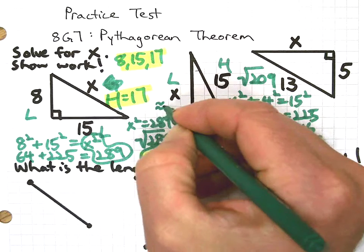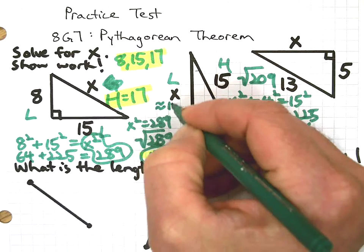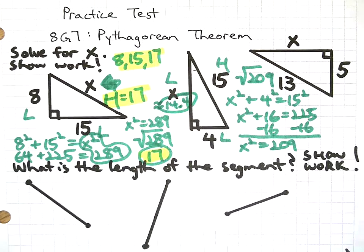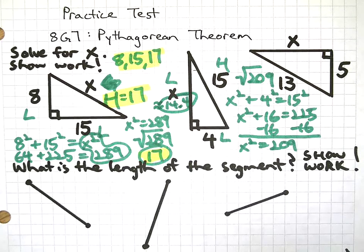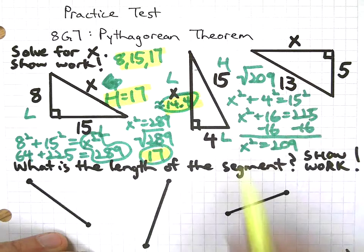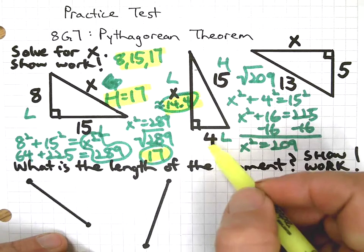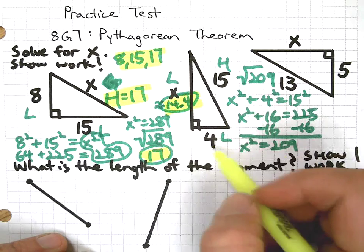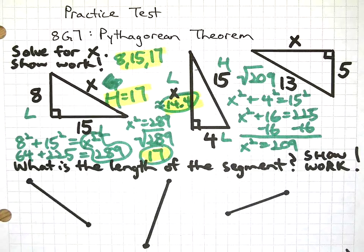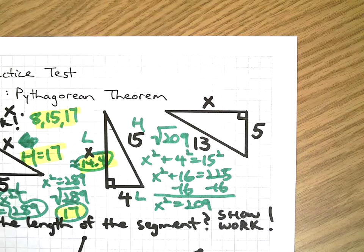Square root 209, it's going to be about 14 and 4 tenths, that's rounded off. Okay, does that make sense? Yes, because each leg needs to be shorter than the hypotenuse, but when I add the legs together it needs to be longer, so that looks like it makes sense.